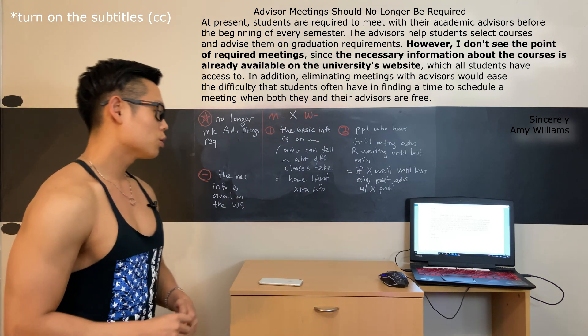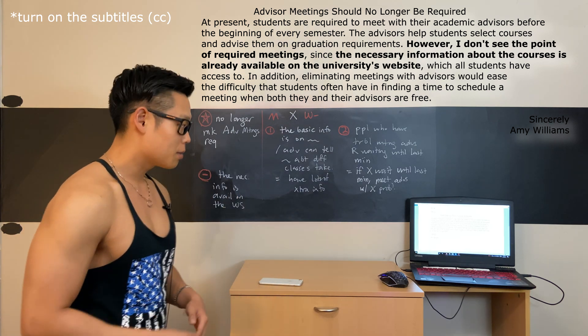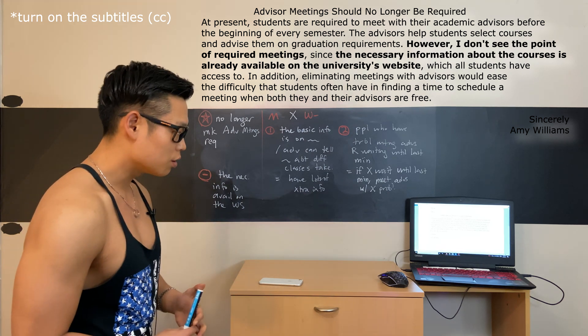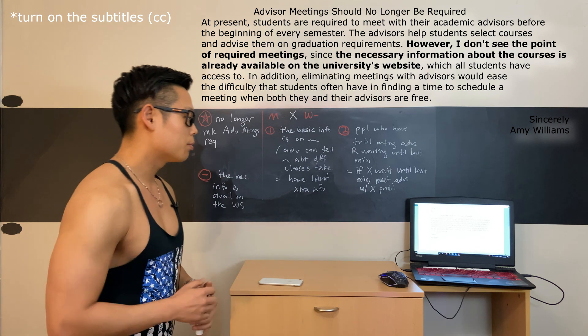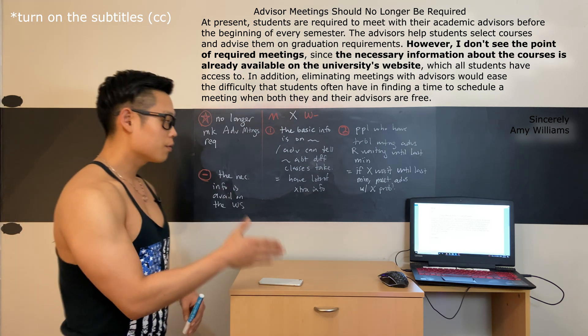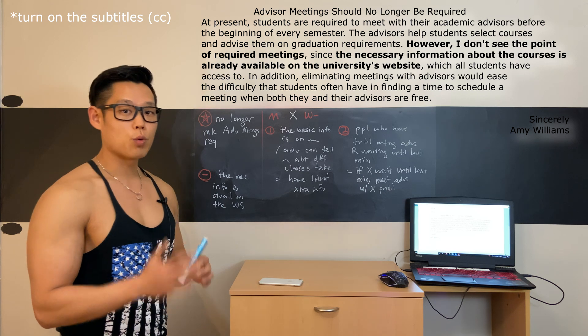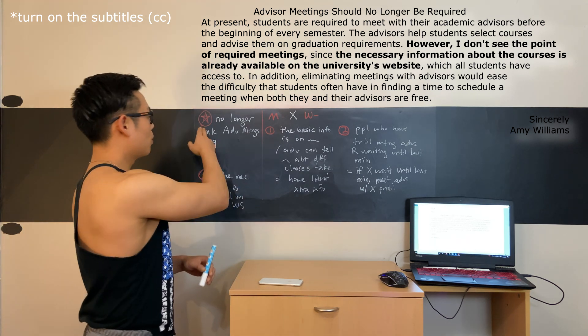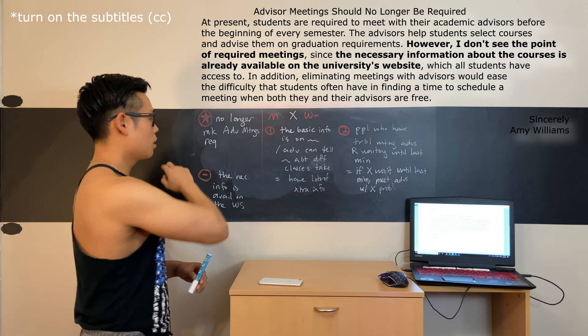The first sentence: At present students are required to meet with their academic advisors. The advisors help students select courses. However, I don't see the point of required meetings. All righty, so the writer of this letter does not see the point of required advisor meetings. So the beginning sentence proposed that the school should no longer make advisor meetings required.